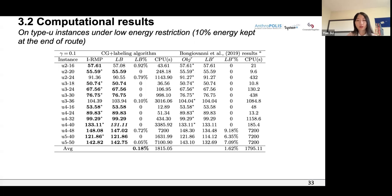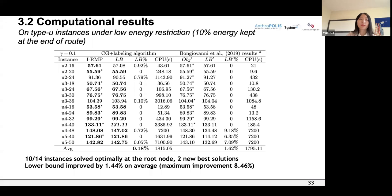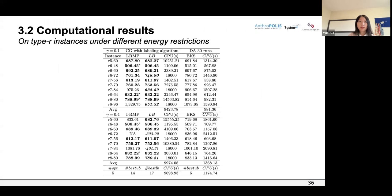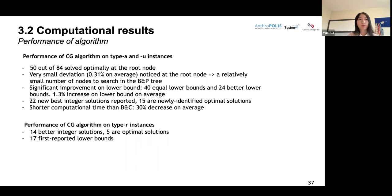For the type U instances, similar observations are noted: we solve most instances optimally at the root node, report new best solutions, and improve lower bounds compared to the best reported results in the literature. For the type R instances — large-scale instances with up to eight vehicles and 96 requests — no exact method result is reported in the literature, so we compare to the best correct heuristic approach. We provide new best solutions and first-ever lower bound values for those large-scale instances. Our column generation algorithm can solve instances with up to eight vehicles and 96 requests, while the branch-and-cut method in the literature cannot.